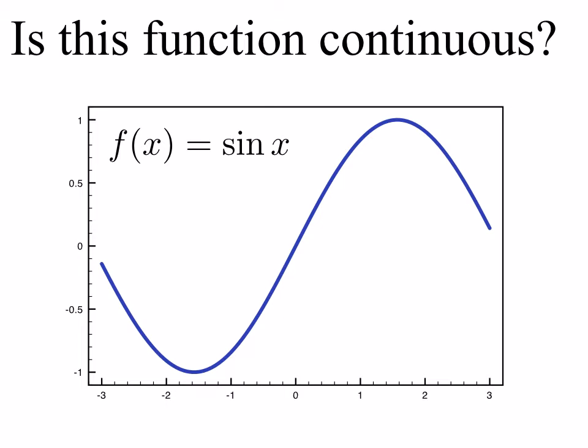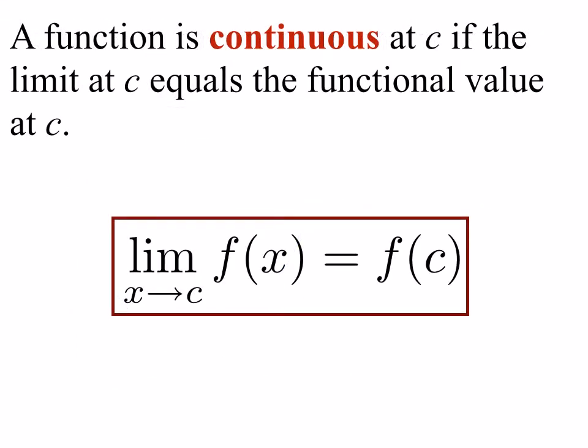But now we need a mathematical definition that will really hold up under all circumstances. We say a function is continuous at c if the limit at c equals the functional value at c. We write that as: the limit as x approaches c of f of x is equal to f of c. These are those special functions where we saw that the limit of a function was exactly the functional value, and so for these functions we say they are continuous at that limit point c.